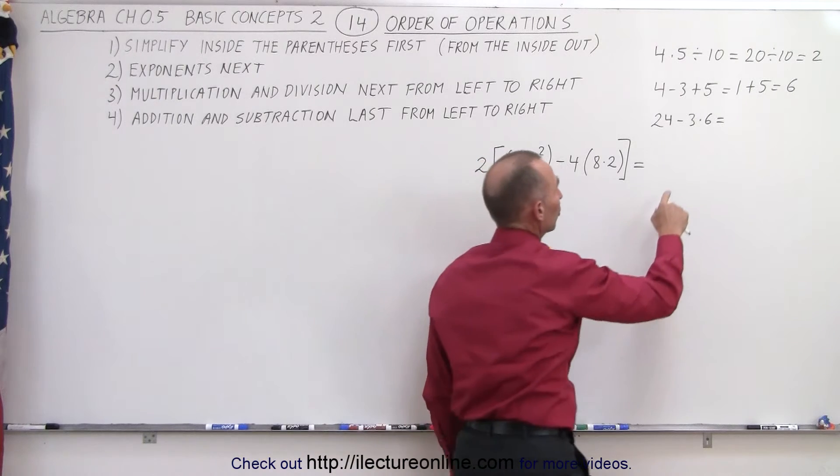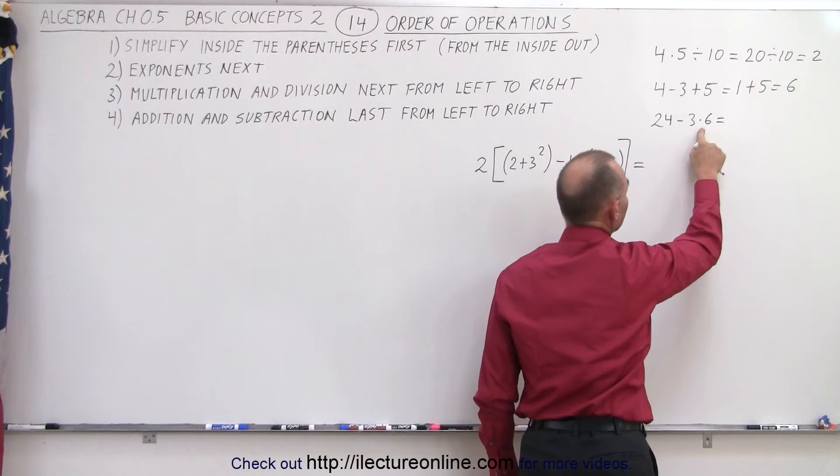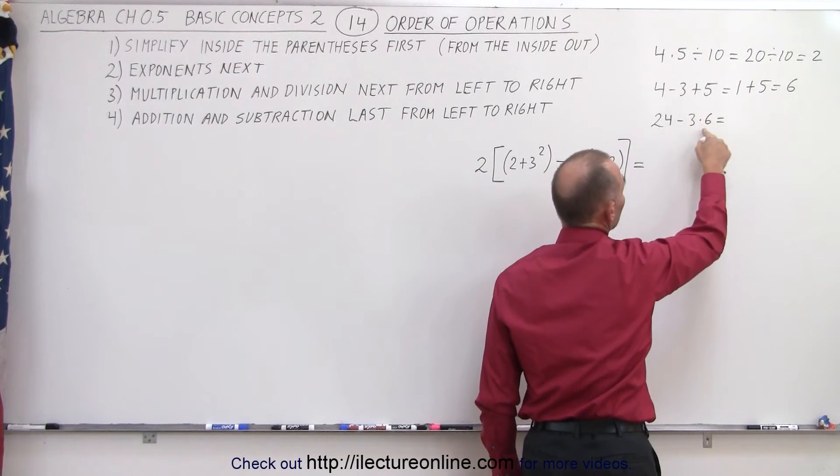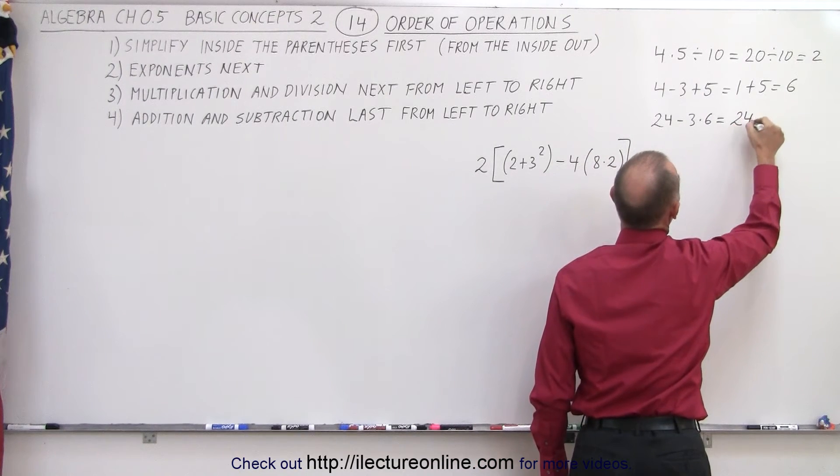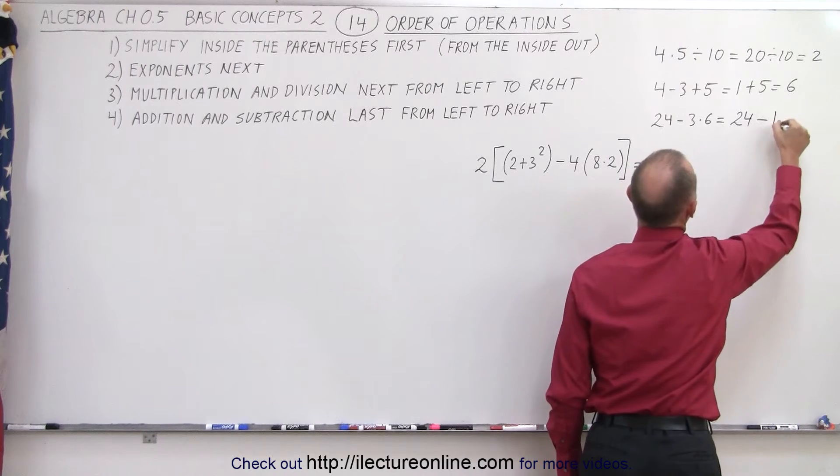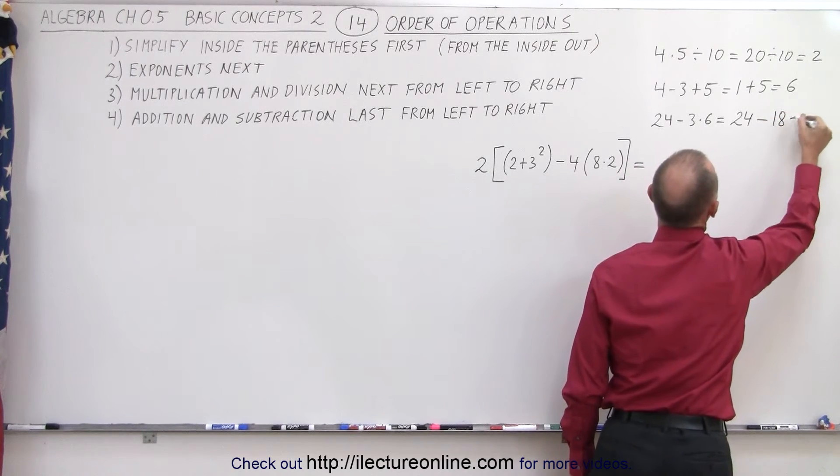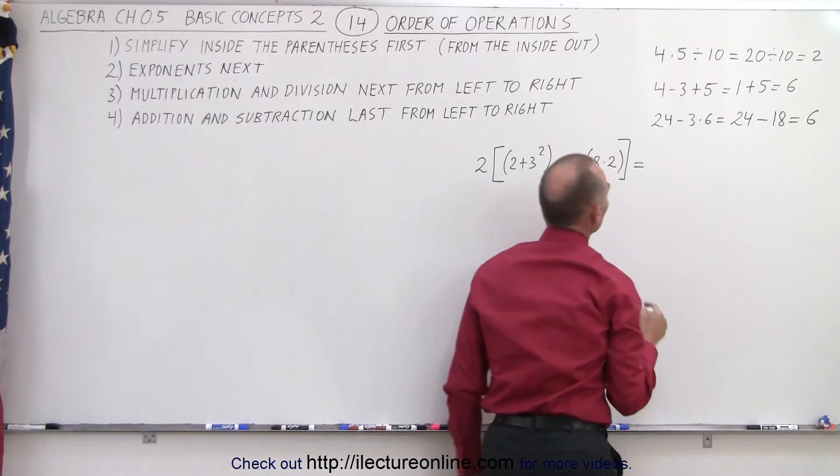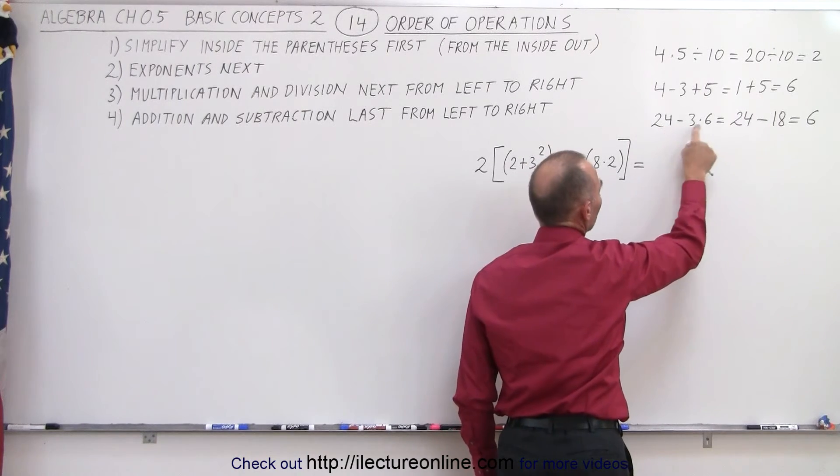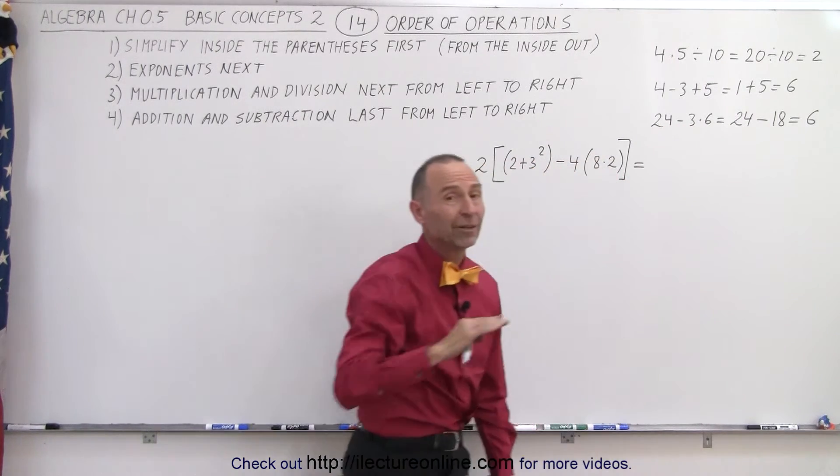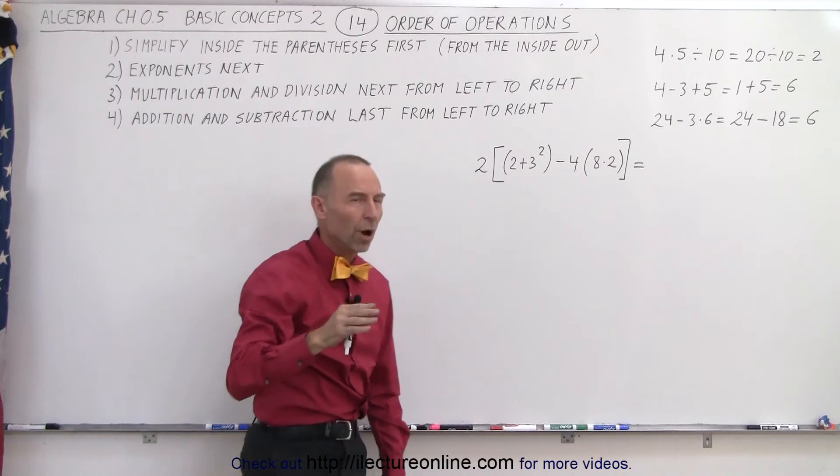And then if we have a mixture of subtraction and a multiplication, notice we should do the multiplication first, before we do the subtraction. So 24 minus 3 times 6, which is 18, and 24 minus 18, which is equal to 6. We should not first subtract the 3 from the 24, and then multiply that result by 6, because we'll get a complete different result, and it'll be a wrong result.